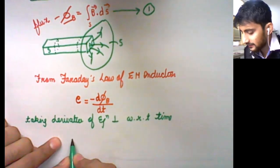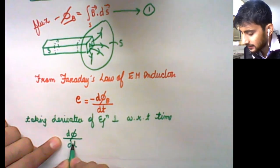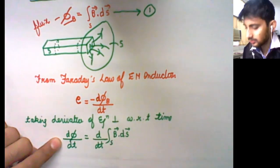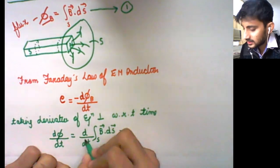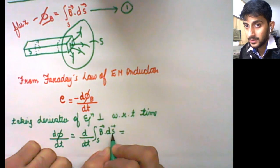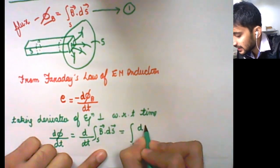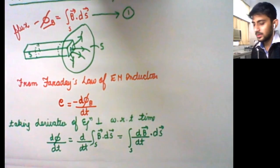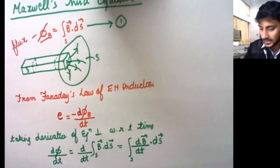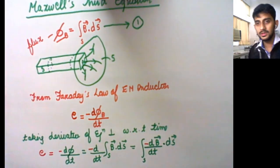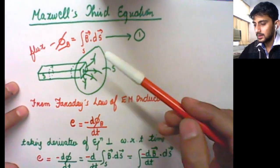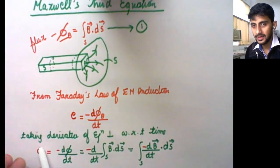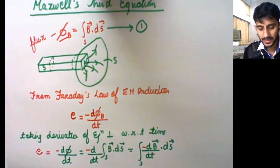Taking the negative sign, EMF equals −∫(∂B/∂t)·dS over the open surface. Also, from the relationship between voltage and electric field — since electric field is volts per meter — multiplying E by a length gives voltage. So EMF over a closed loop equals the line integral ∮E·dl. Equating this with −∂B/∂t, we get: ∮E·dl = −∫(∂B/∂t)·dS.